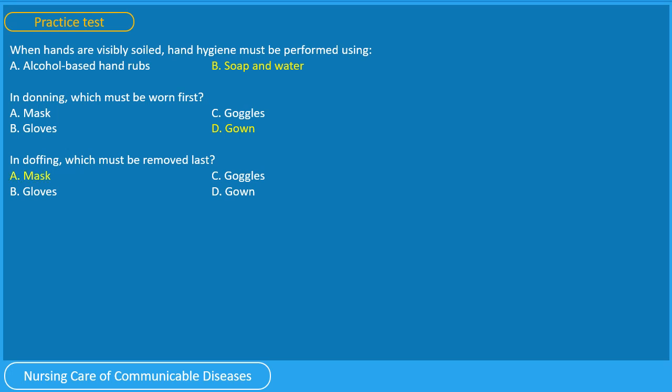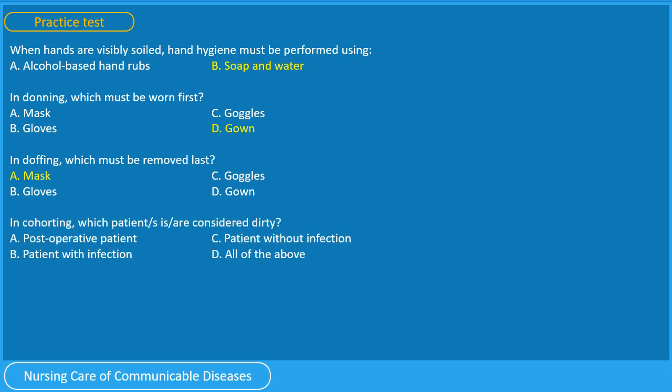Remember our mnemonic that we must doff alphabetically — remove first the gloves, followed by the goggles, and then the gown. And lastly, the correct answer for this question is A. Mask. In cohorting, which patient is considered dirty? A. A post-operative patient, B. A patient with infection, C. A patient without infection, or D. All of the above. The correct answer is B. A patient with infection.